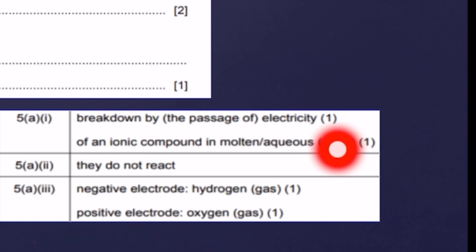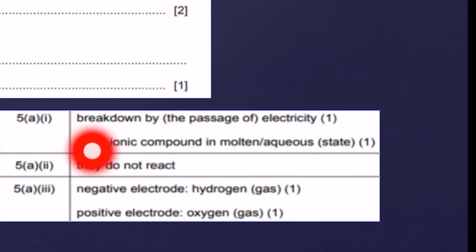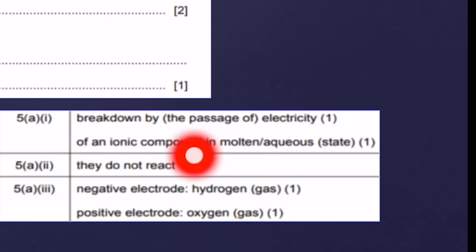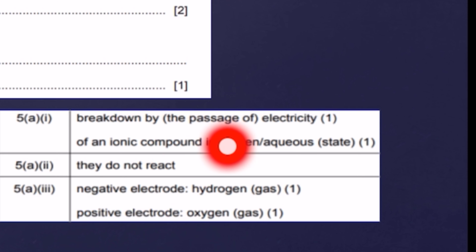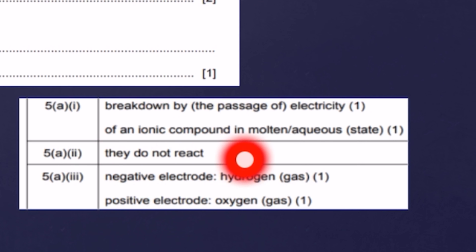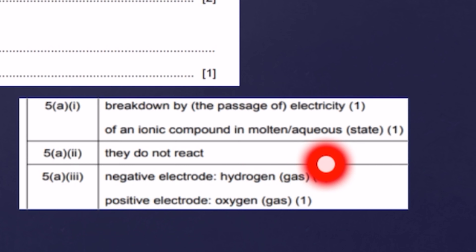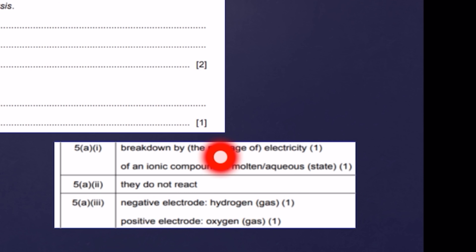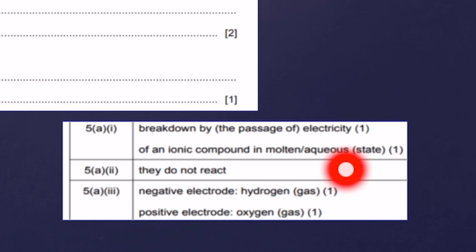One mark is given for writing 'breakdown by the passage of electricity' — the phrase 'the passage of' is optional. The second mark is for writing 'of an ionic compound in molten or aqueous state.' If you write both of these sentences you will be given the complete two marks; either one alone gives only one mark.